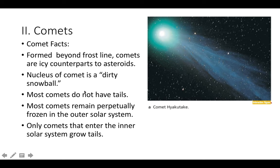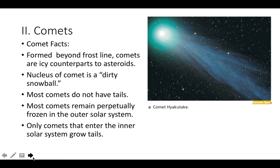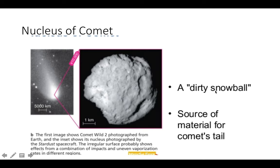The last section I want to talk about is comets. Some quick facts: they form beyond the frost line, so beyond Jupiter. They have an icy composition compared to asteroids, and the nucleus can basically be described as a dirty snowball. They can form tails, but most do not have tails. Comets remain frozen in the outer solar system, and when they enter the inner solar system — inside Mars — they tend to grow tails.